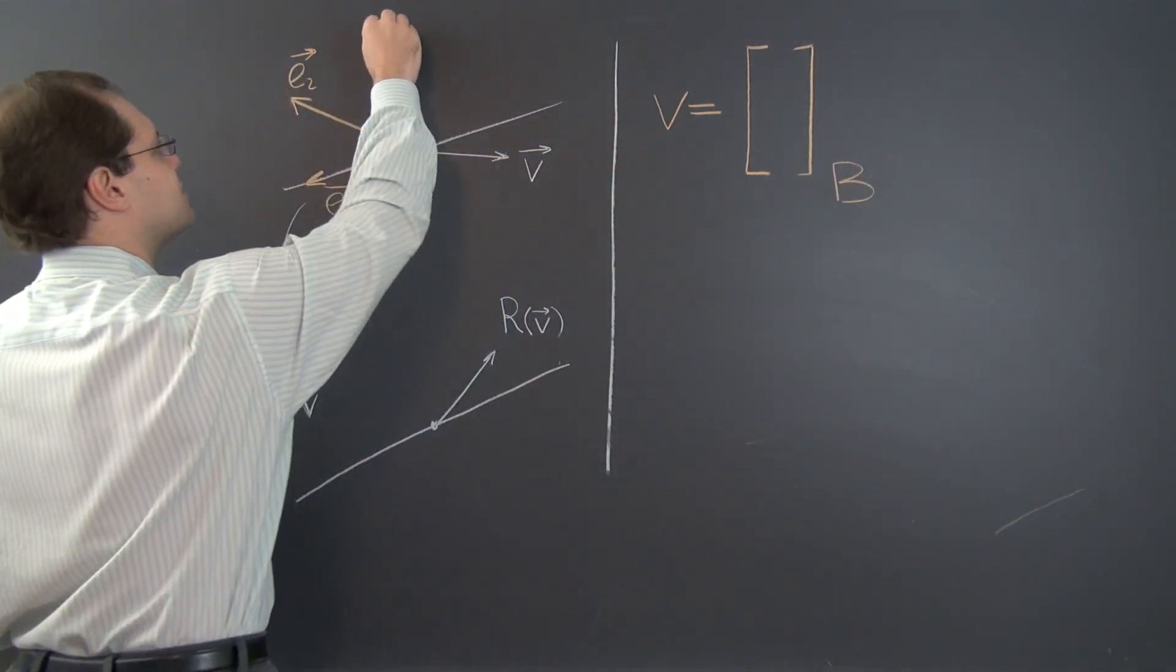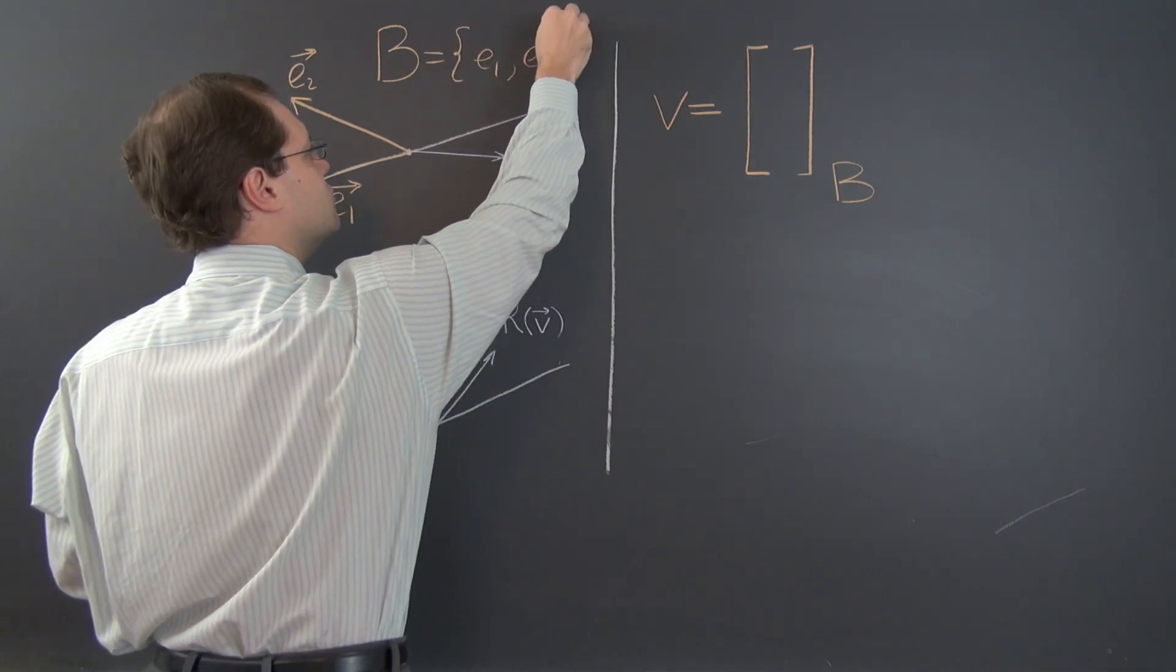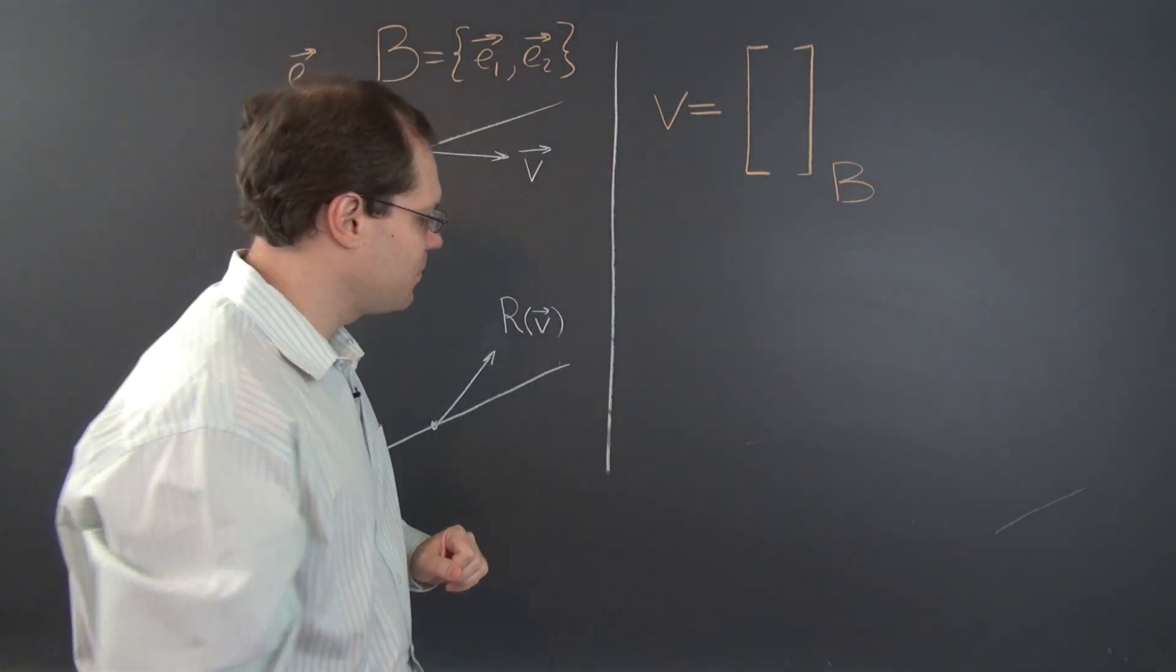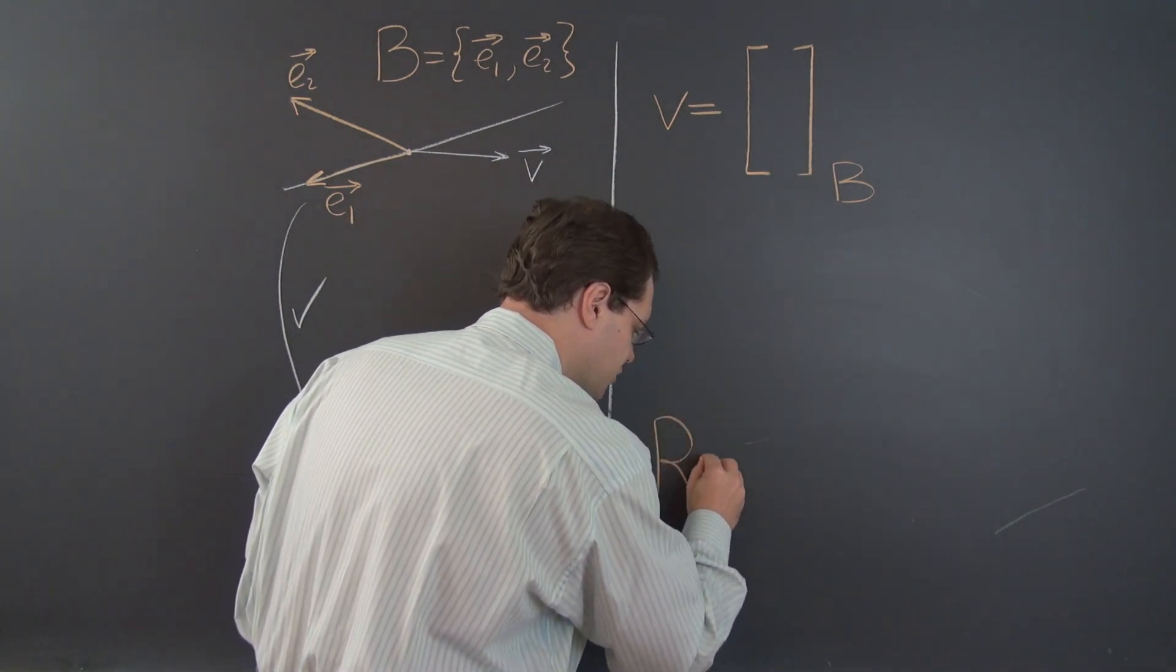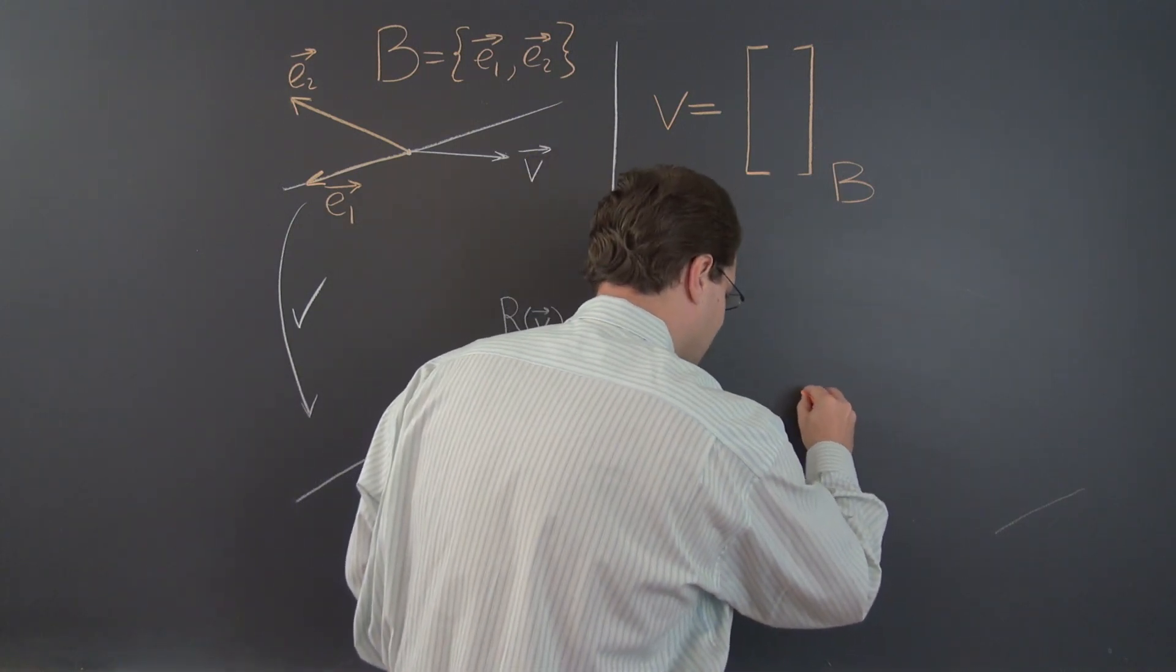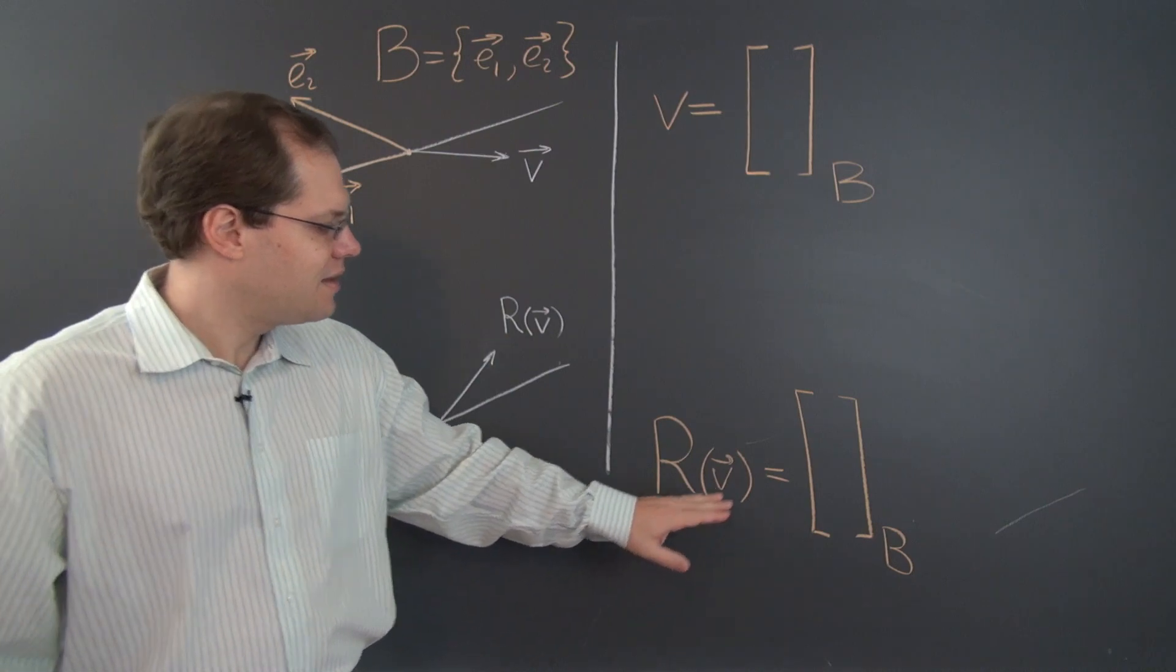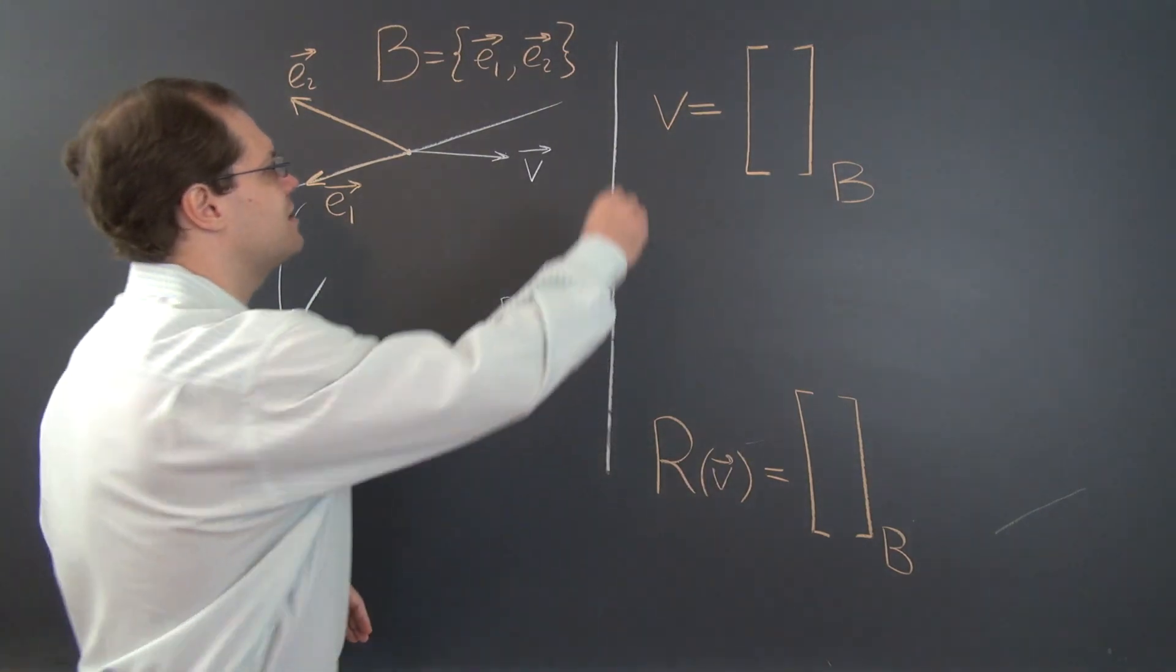But the first step would be to find the components of the vector V with respect to this basis that we'll call B. So let's write down that B consists of E1 and E2. So that will be step number one. Step number two will be the mystery step to be filled in moments later. And then finally, this mystery step will produce not so much R of V, as we know, but the components of R of V. And that will be the next, and that will be the final third step.